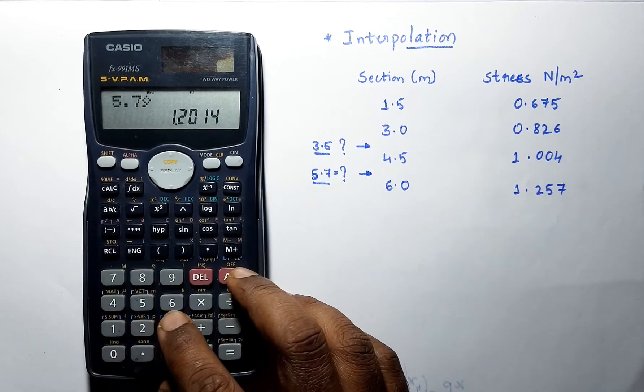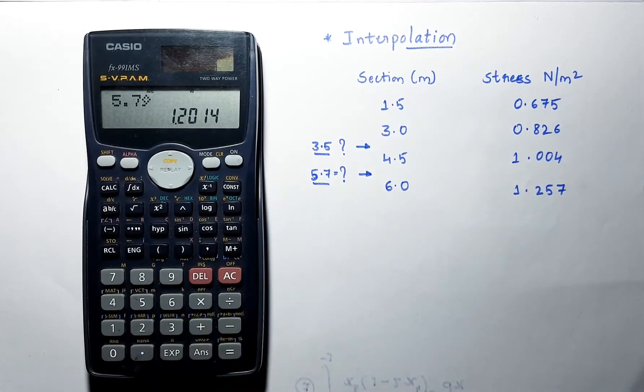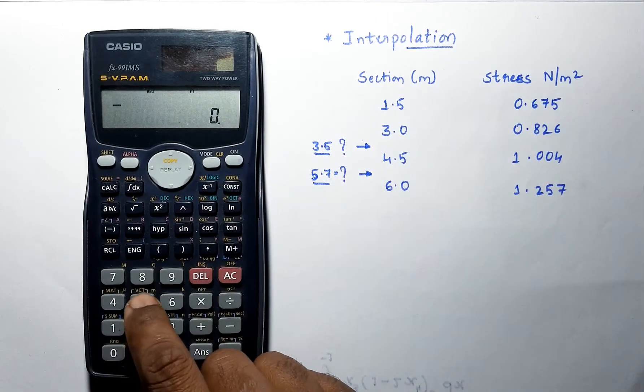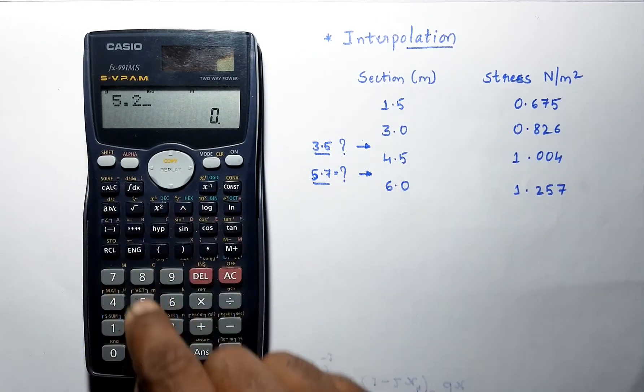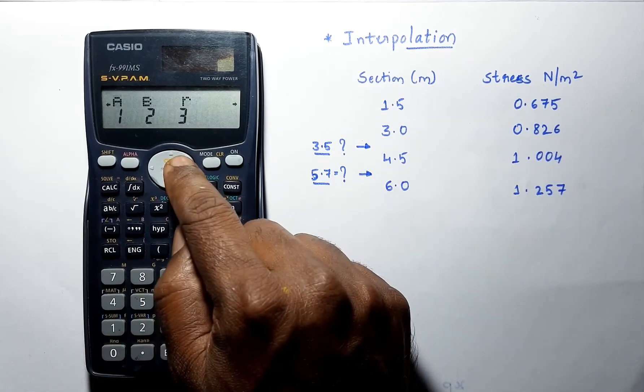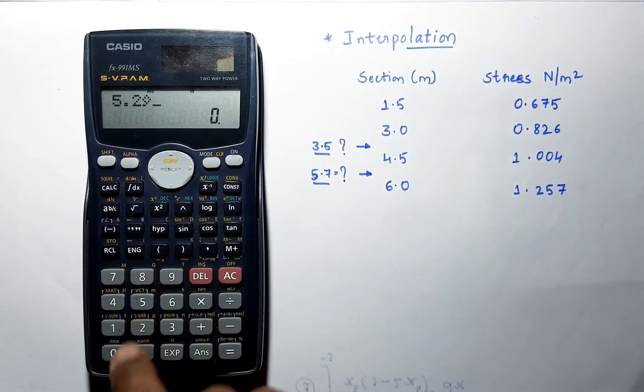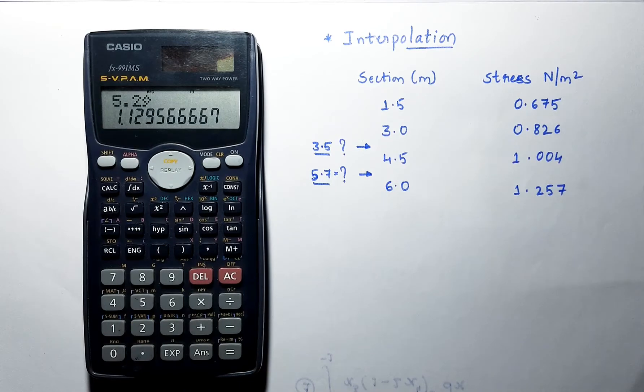Let's say we have to find out for 5.2. Again press shift 2 and select this symbol and press equals. Now we are getting the value for 5.2.